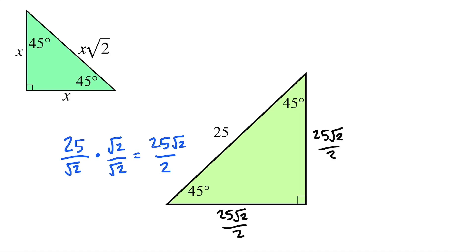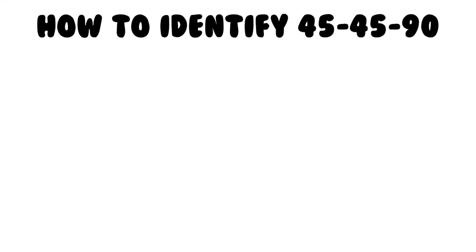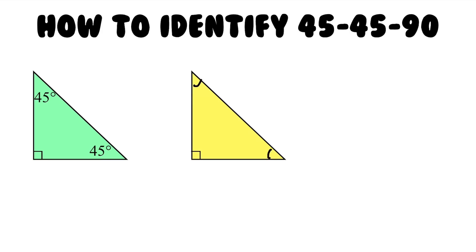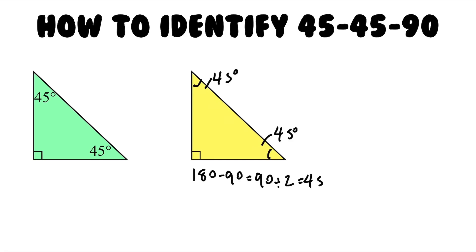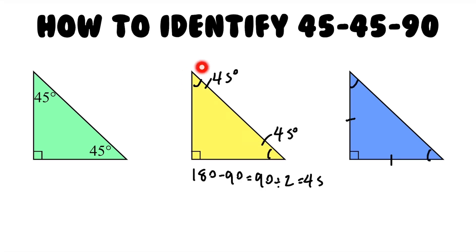Before moving on to 30-60-90 right triangles, here's a quick note on how to identify 45-45-90 right triangles. First, two 45 degree angles may be labeled directly. Another way is if the triangle is labeled with congruent angles — since a triangle has 180 degrees, subtracting the 90 degree right angle leaves 90, and dividing by two gives 45 degrees for each angle. The last way is if the triangle has congruent side labels, because congruent sides mean congruent angles.